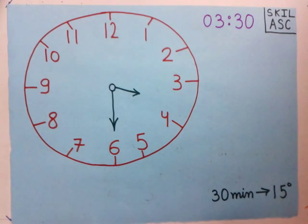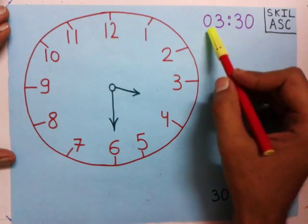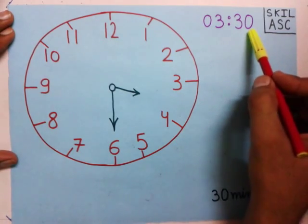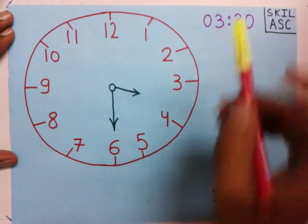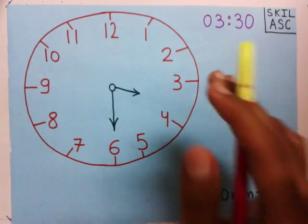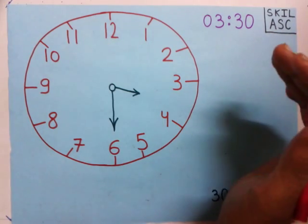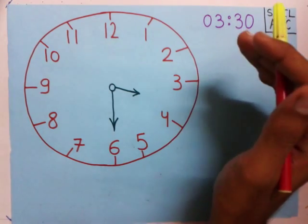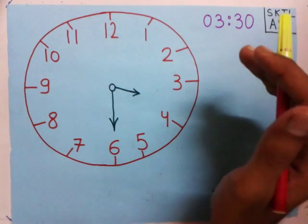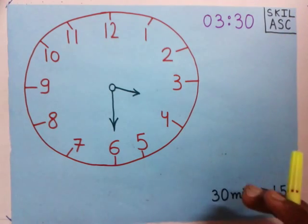Welcome to learn about clocks. Suppose the time is 3:30 and at this time we have to find the angle between the hour hand and the minute hand.